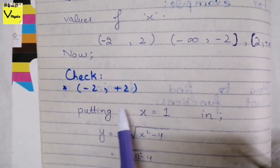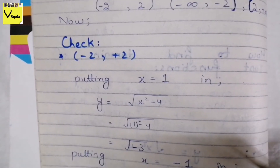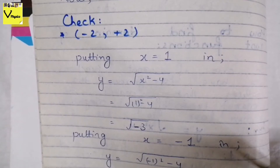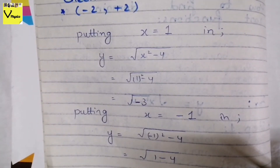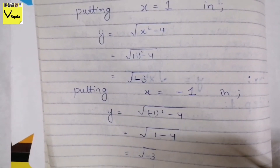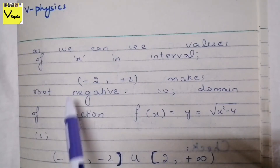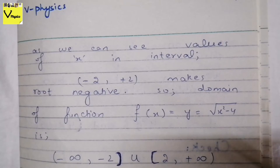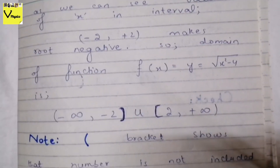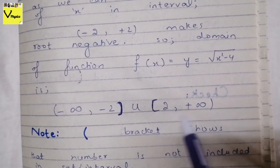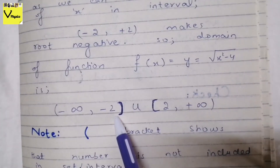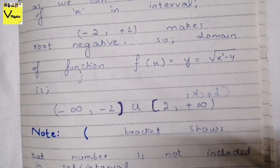Since the interval from −2 to +2 makes the function complex, we eradicate it. The remaining intervals — minus infinite to −2, and 2 to plus infinite — do not make the function complex or infinite. So this is the domain of that function: (−∞, −2] ∪ [2, +∞). We use union because both intervals satisfy the conditions. The interval between −2 and 2 makes the root complex.